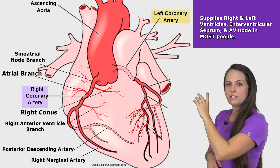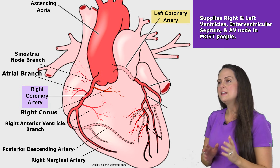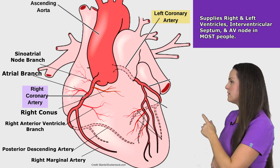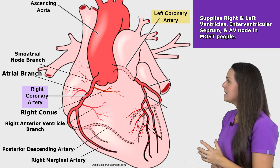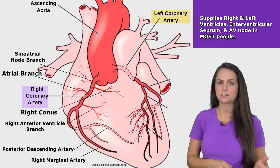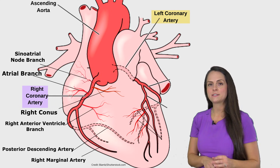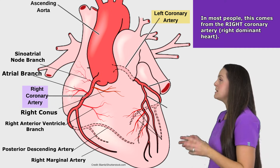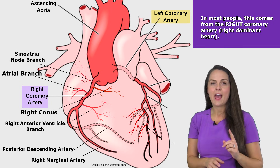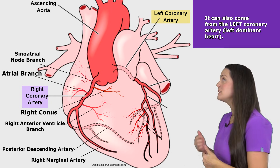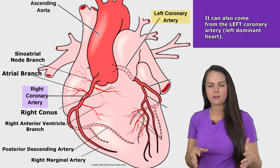This artery leaves the anterior side and travels to the posterior side — the back of the heart — going downward, hence the name. It supplies our right and left ventricle, our interventricular septum (the wall separating the ventricles), and in some people, it can supply the AV node. Notably, in most people this artery comes off the right coronary artery — we call that a right dominant heart. However, in a smaller group, it comes off the left coronary artery, which we call a left dominant heart.